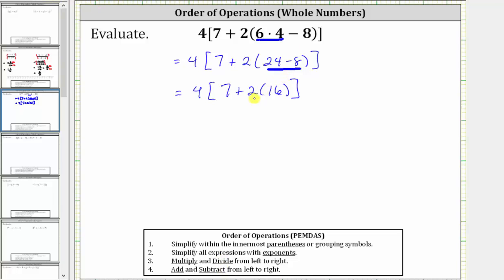The next step is to determine the product of two and 16. Two times 16 is equal to 32. The expression simplifies to four times the quantity seven plus 32. The expression simplifies to 156.